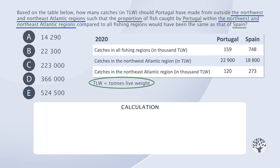Let's first calculate the proportion for Spain, since that's our point of comparison. Catches by Spain in the North-West and North-East Atlantic regions in 1,000 TLW will be 18,800 divided by 1,000, plus 273, which equals 291.8. We divided by 1,000 here since the data for the North-West Atlantic region in the table is not provided in the thousands the way it is for the North-East Atlantic region.